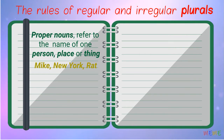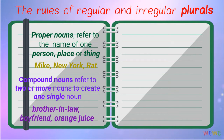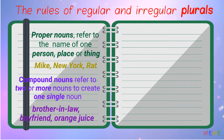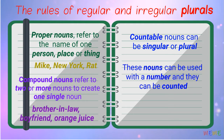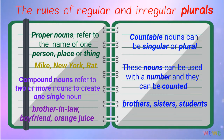Compound nouns refer to two or more nouns combined to create one single noun. For example: brother-in-law, boyfriend, orange juice. Countable nouns can be singular or plural. These nouns can be used with a number and they can be counted. For example: brothers, sisters, students.